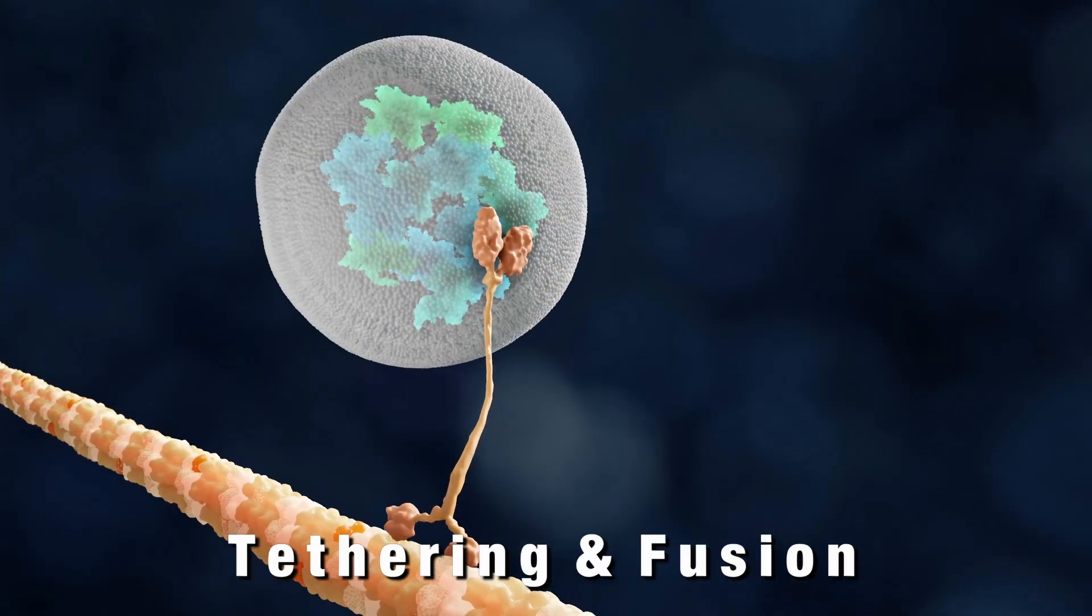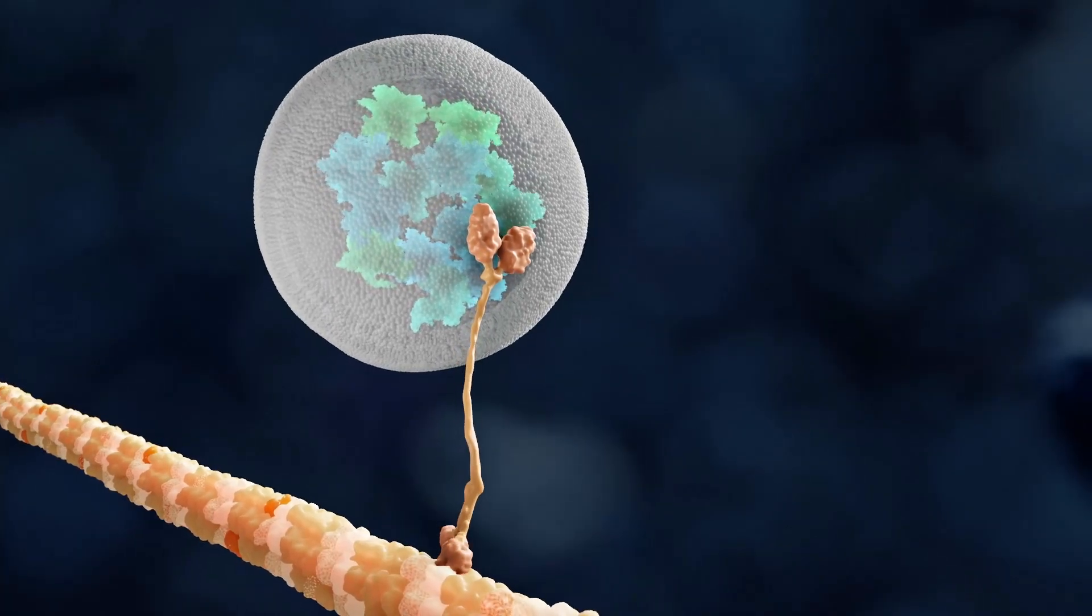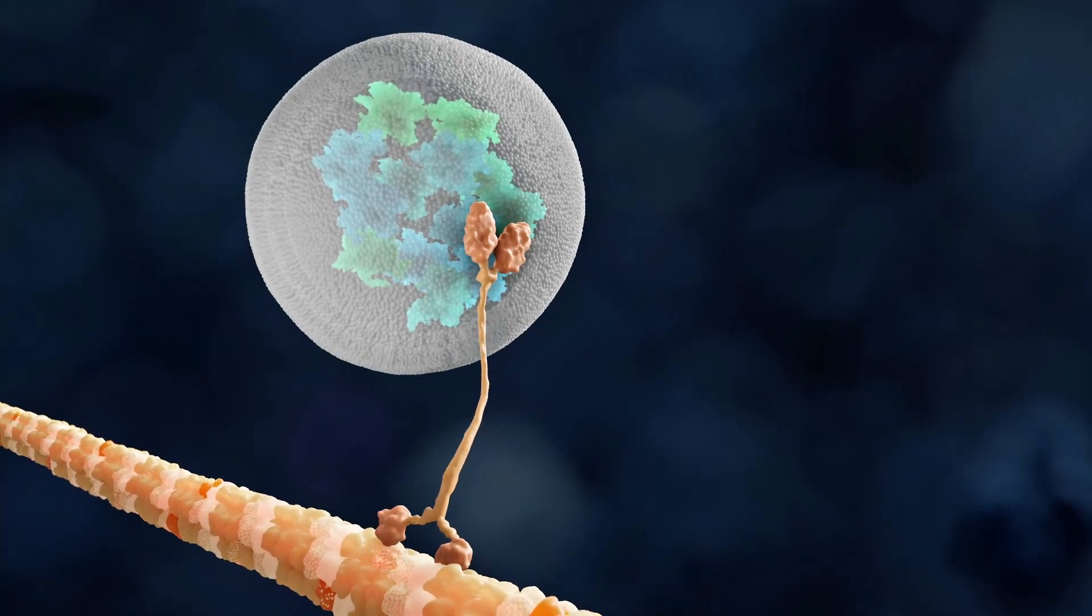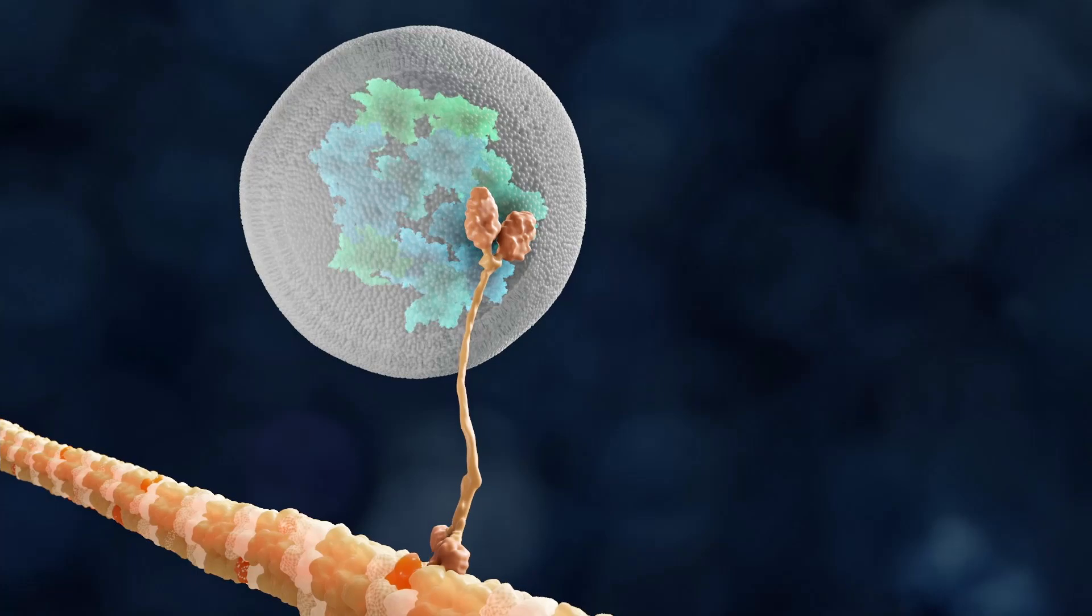For the tethering and fusion steps, motor proteins and microtubule tracts ensure the encounter of autophagosomes, first with late endosomes to form amphosomes and then lysosomes, or directly with lysosomes to generate autolysosomes.